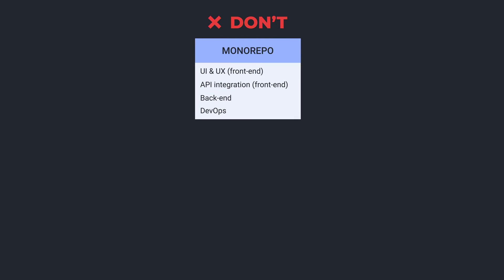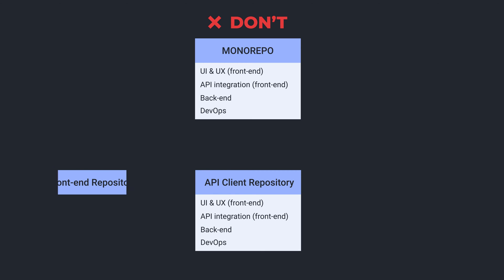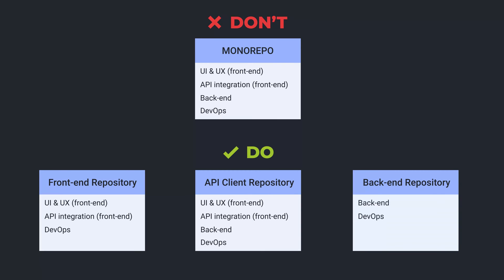First of all, the front-end is always in an isolated repository. We don't have a single repository for the whole project. We generally have three repositories for each project: a front-end, a back-end, and an API client. This structure is very important when you're working with clients, because they don't want every developer to have access to everything, and this allows more access control.